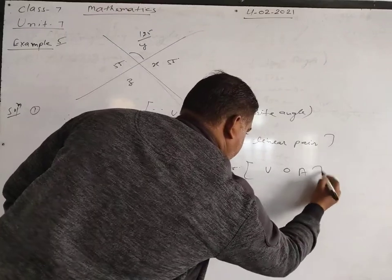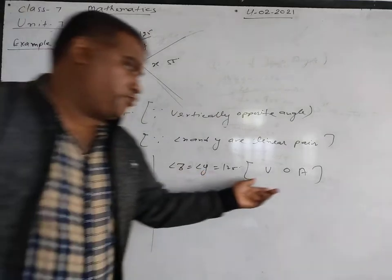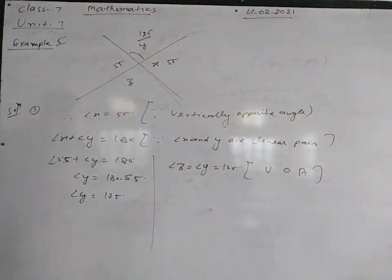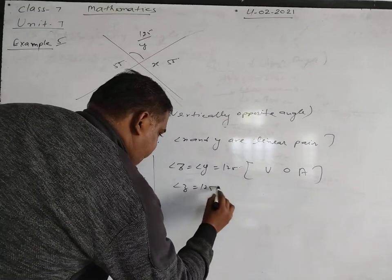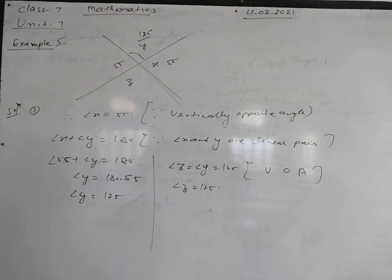Vertically opposite angles y and z are complete. So angle z is equal to 125 degrees because they are vertically opposite angles.